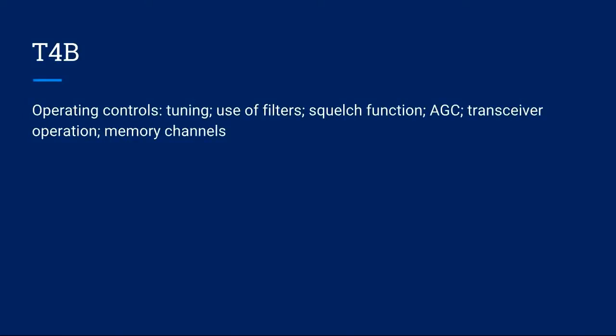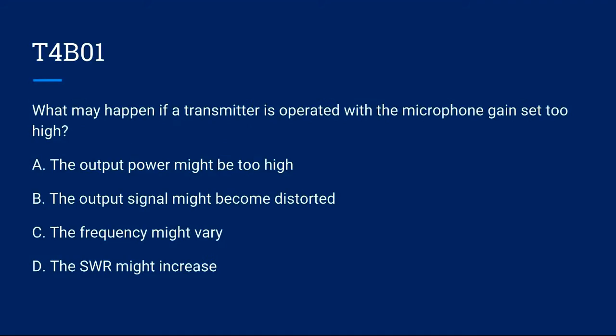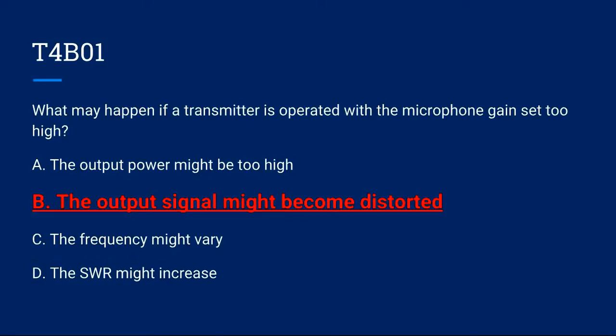Continuing on — T4B: operating controls, tuning, use of filters, squelch function, AGC, transceiver operation, and memory channels. T4B01: What may happen if a transmitter is operated with the microphone gain set too high? A. The output power might be too high. B. The output signal might become distorted. C. The frequency might vary. D. The SWR might increase. The correct answer is B. The output signal might become distorted.